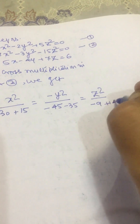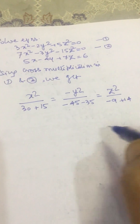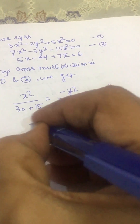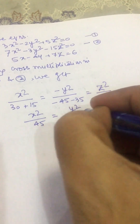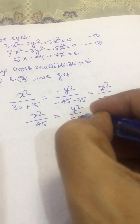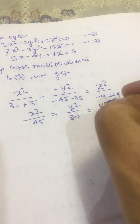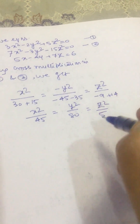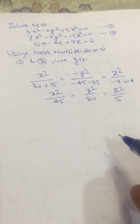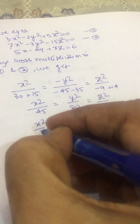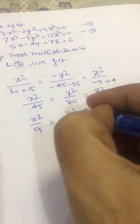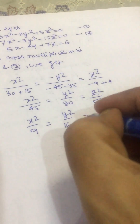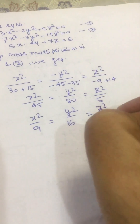So we can write x² divided by 45 equal to y² divided by 80 equal to z² divided by 5. Dividing each denominator by 5, we get x² divided by 9 equal to y² divided by 16 equal to z² divided by 1.